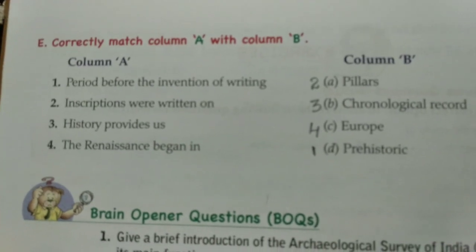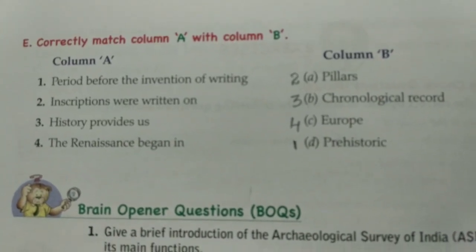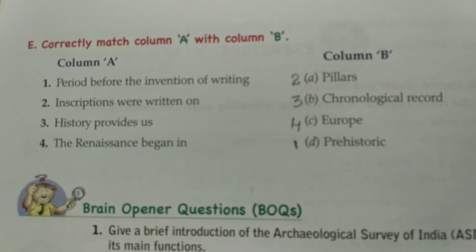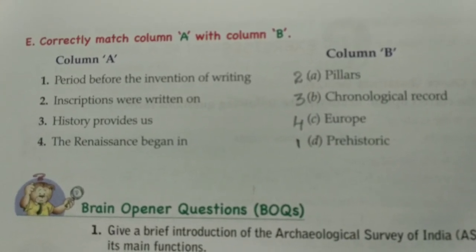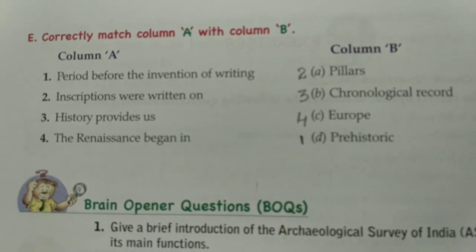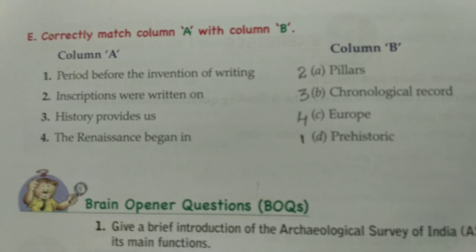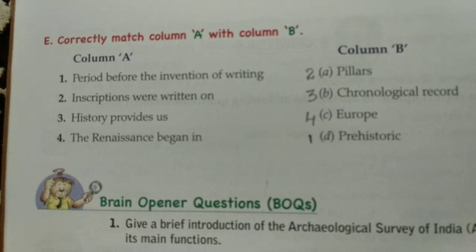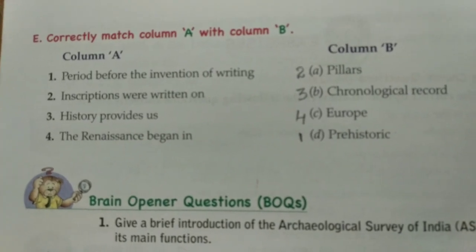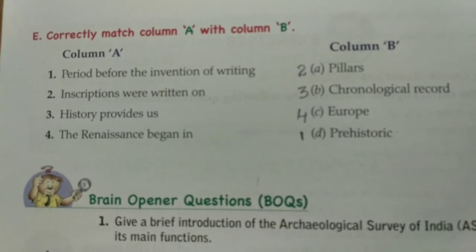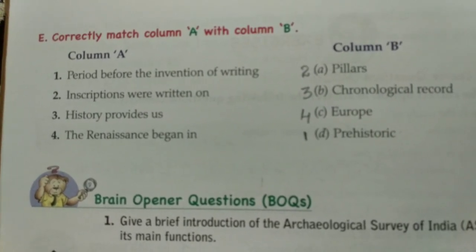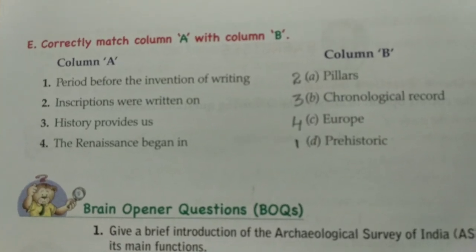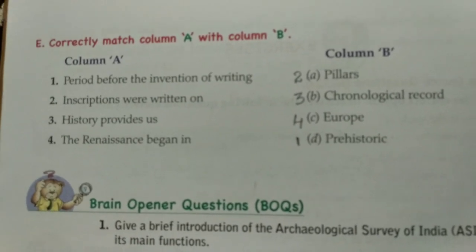Let's turn the page and check Match the Following — correctly match column A with column B. Number 1: period before the invention of writing — prehistoric. Inscriptions were written on pillars, coins, temple walls and all, so the option is pillars. History provides us a chronological record. And number 4: the Renaissance began in Europe. Almost the questions are the same, so you all can understand it very easily.